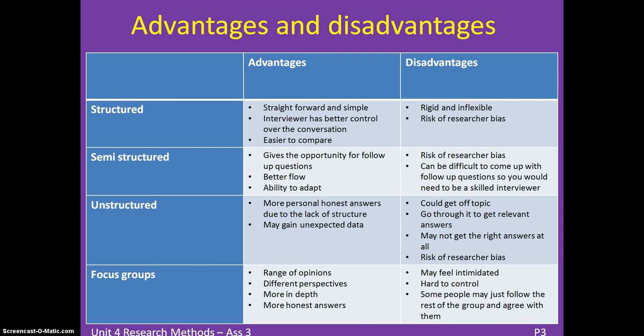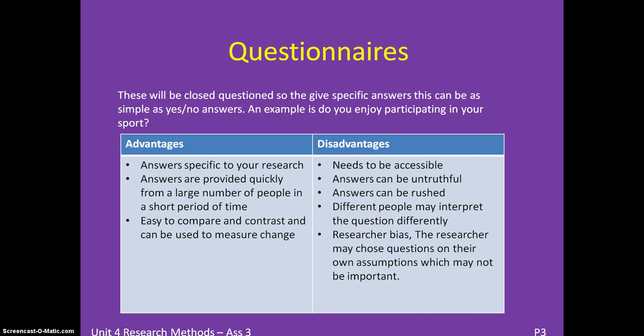For quantitative data collection, there are closed-question questionnaires and observation. Closed questions give specific answers — as simple as yes or no — for example, 'Do you enjoy participating in your sport?' Advantages include getting answers specific to your research quickly from a large number of people, and it's easy to compare and measure change. Disadvantages include that the questionnaire needs to be accessible, answers can be untruthful or rushed, different people may interpret questions differently, and there is a risk of researcher bias.